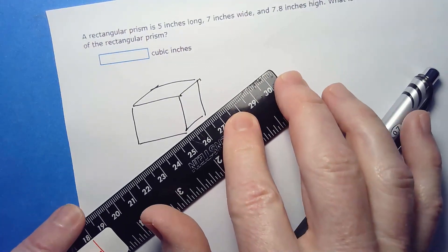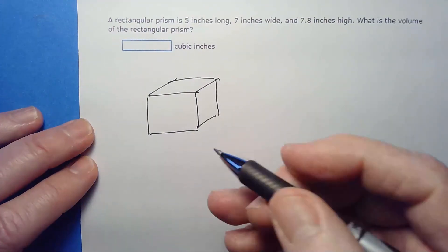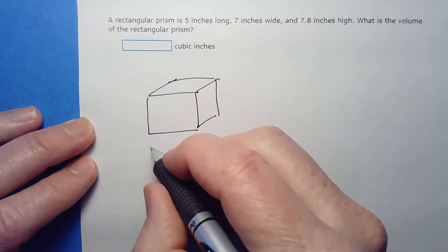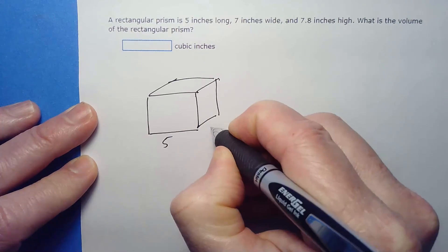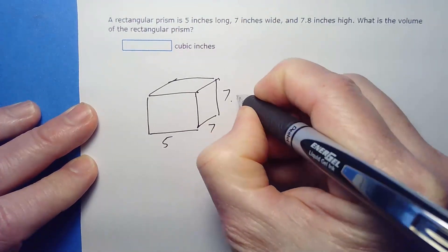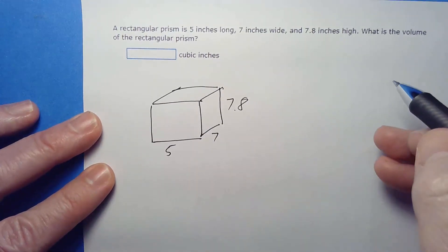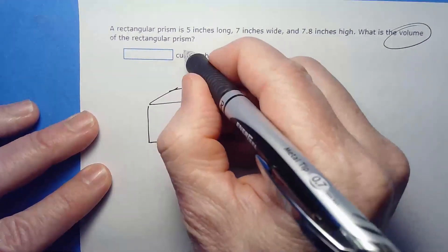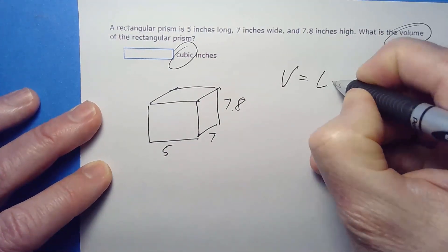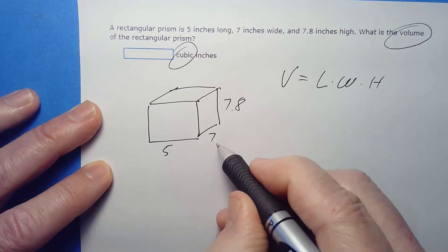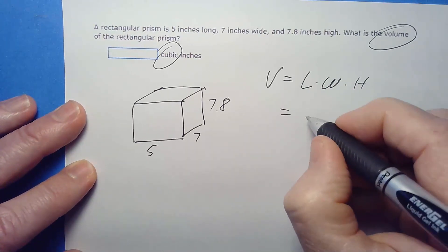What's even easier is just start with a rectangle and then just show it kind of going back into the page. That's an even easier way to draw it. It's pretty easy to draw a rectangle and then just make sure those lines are all at the same angle. If I had a ruler, notice if I move that ruler, notice how they're always at the same angle. That just makes it look more realistic.